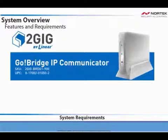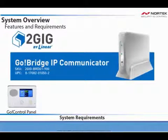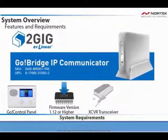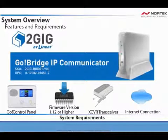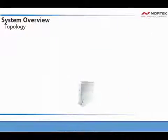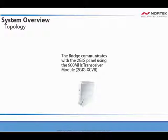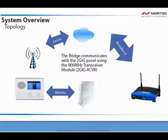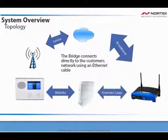To use the GoBridge IP Communicator, you must have a Go Control Panel running firmware version 1.12 or higher. Make sure that you have the 2GIG XCVR transceiver and an Internet connection. The GoBridge communicates with the 2GIG panel using the 900 MHz transceiver module, the 2GIG XCVR.